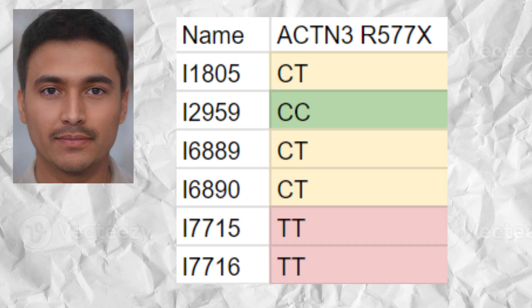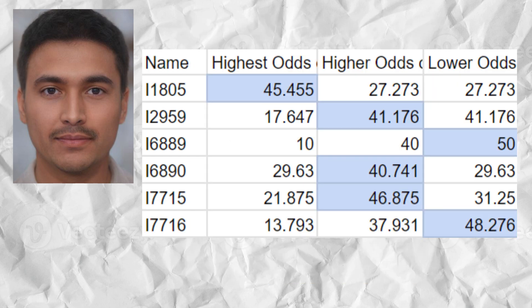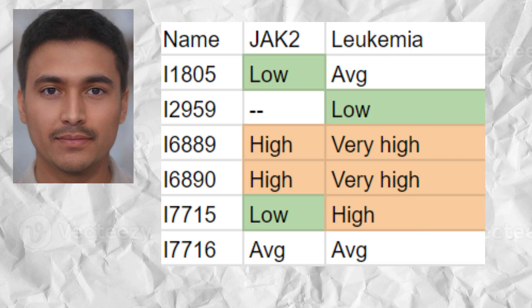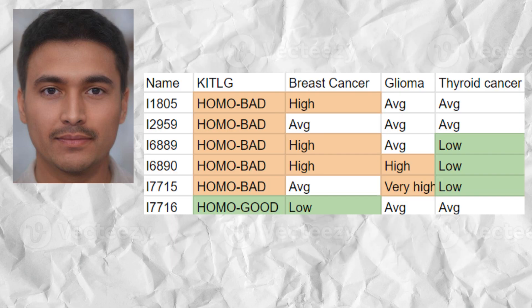The non-athletic X or T allele in ACTN3's R577X was found at high frequency among the six Swatvali samples, whereas the sprinter C allele was rather uncommon — only one sample carried the CC sprinter genotype. The samples had a high predisposition to epithelial cancer and average predisposition to blood cancers such as leukemia or polycythemia vera. They also showed high predisposition to testicular cancer, high predisposition to breast cancer, high predisposition to brain cancer or glioma, and low predisposition to thyroid cancer.